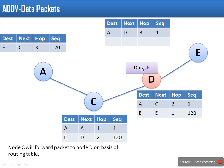Node D does not show any malicious behavior until the data packet is sent. At the time of route request it acts as a normal node, at the time of route reply it also works as a normal node, but at the time of data packet sending it acts as a malicious node and drops these packets. So gray hole attack is hard to detect because it won't show its behavior until data is being sent.